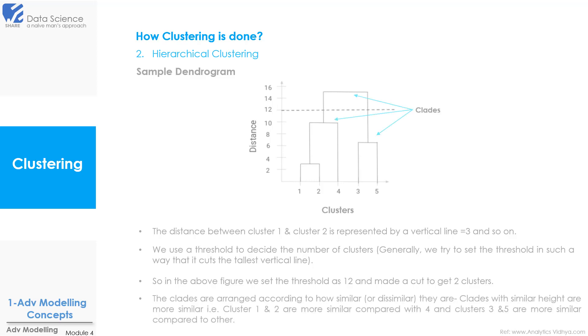One more thing we can know from here is the clads as shown above. Clads are arranged according to how similar or dissimilar they are. Clads with similar height are more similar. That is cluster 1 and 2 are more similar compared with cluster 4, and cluster 3 and 5 are more similar compared to other clusters.